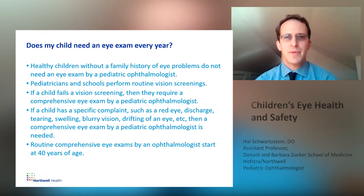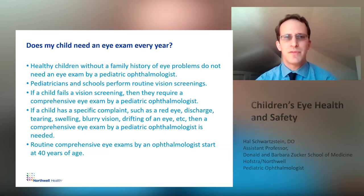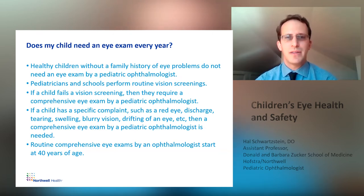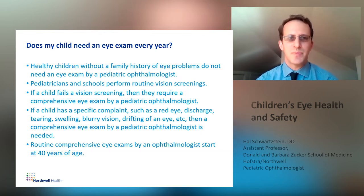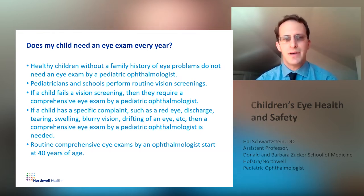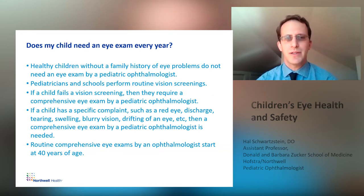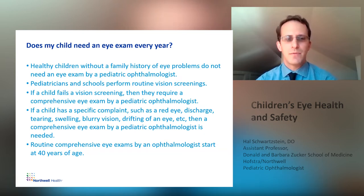Healthy children without a family history of eye problems do not need an eye exam by a pediatric ophthalmologist. Pediatricians and schools perform routine vision screenings. If a child fails a vision screening, then they require a comprehensive eye exam by a pediatric ophthalmologist. If a child has a specific complaint such as a red eye, discharge, tearing, swelling, blurry vision, drifting of an eye, etc., then a comprehensive eye exam by a pediatric ophthalmologist is needed. Routine comprehensive eye exams by an ophthalmologist start at 40 years of age, with some exceptions.